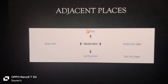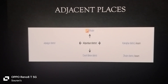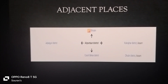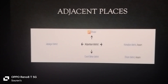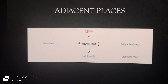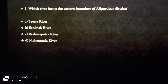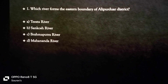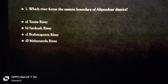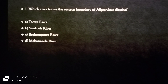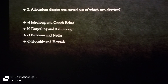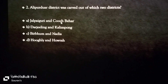Bhutan shares international boundaries in this area. There are two districts in the Dooars area and two in the southern district. The Torsa river forms the eastern boundary. Alipurduar district was carved out of Jalpaiguri and Coochbehar, formed on 25 June 2014.